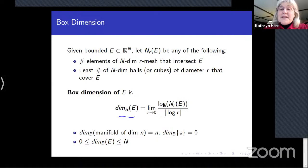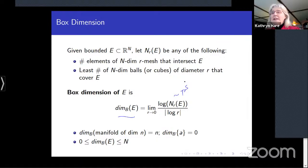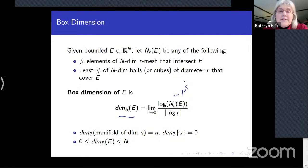This is the idea behind box dimension. For any bounded subset E of ℝⁿ, we let N_r(E) be the number of elements from an n-dimensional r-grid that intersect E, or the least number of balls or cubes of diameter r covering E. We take log of that number and divide by log(1/r), which equals |log r|, and let r go to zero. That limit is the box dimension of E.